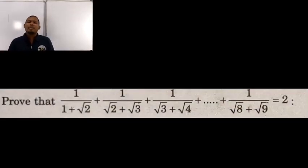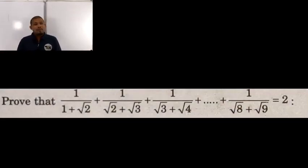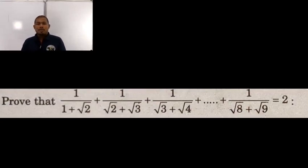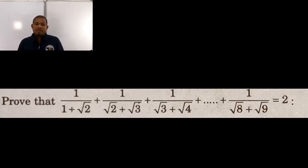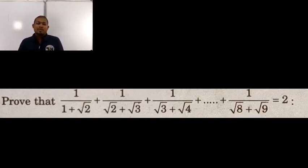I'm going to talk about 1 divided by 1 plus root over 2, plus 1 divided by root over 2 plus root over 3, plus 1 divided by root over 3 plus root over 4, and so on, plus 1 divided by root over 8 plus root over 9, which is equal to 2.